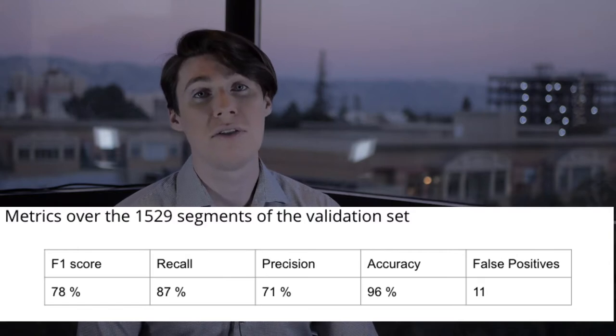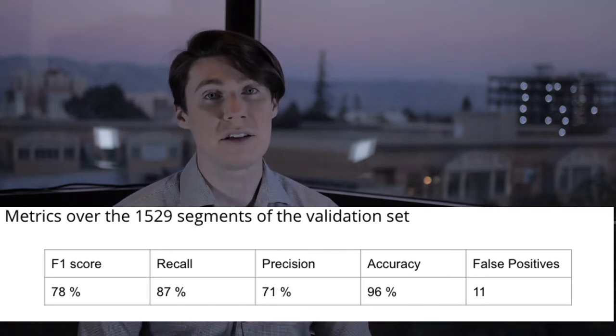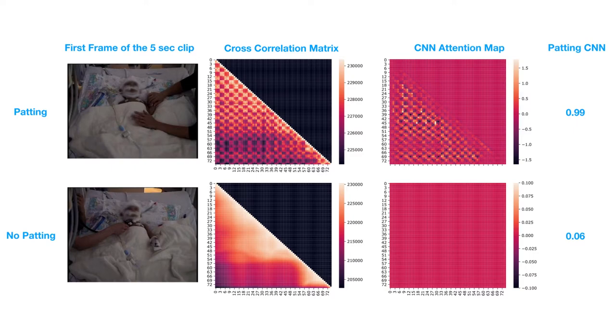In this table, you can see the results on the validation set. It is interesting to note that thanks to the high recall, we will be able to identify most of the patting samples. However, there will be some false alarms. To verify that the neural network identified the correct features in the cross-correlation matrix, we computed the attention of the network, which highlights areas in the image that were discriminative for the prediction. We notice that the areas with a periodic pattern in the cross-correlation matrix are picked up by the network, while the rest of the correlation matrix is ignored. This confirms our hypothesis that the network uses the periodicity in the cross-correlation matrix to accurately detect patting from the video data.